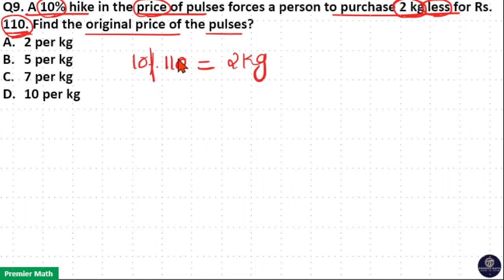Here percentage and double zero cancel. 2 kg price is equal to Rs. 11 means 1 kg price is equal to Rs. 11 by 2. Now this price is the increased price.